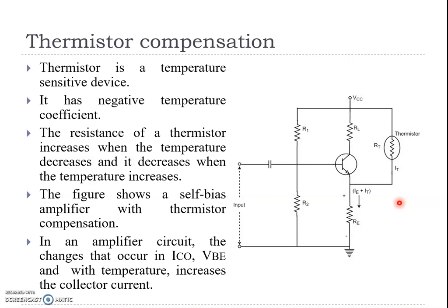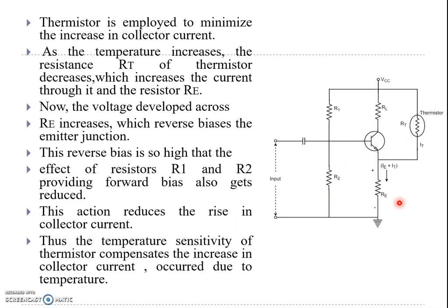The resistance of a thermistor increases when temperature decreases. The figure shows a self-biased amplifier with a thermistor. The changes that occur in ICO and VBE with temperature increase the collector current. The thermistor is employed to minimize this increase in collector current.